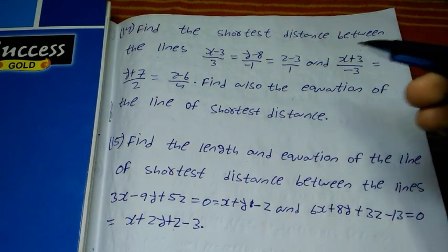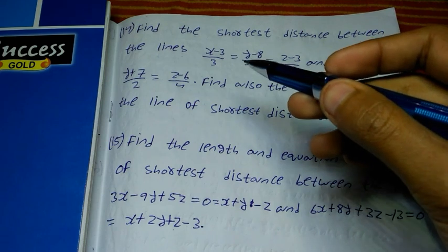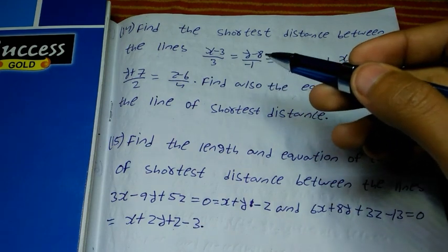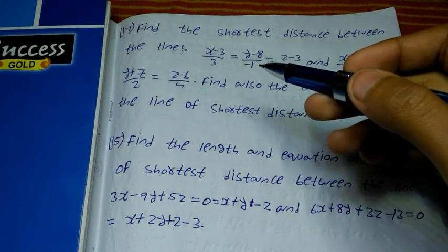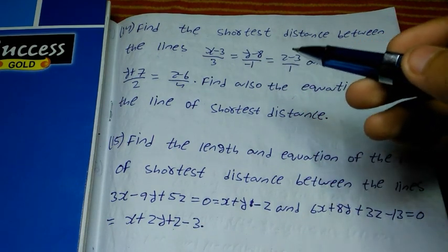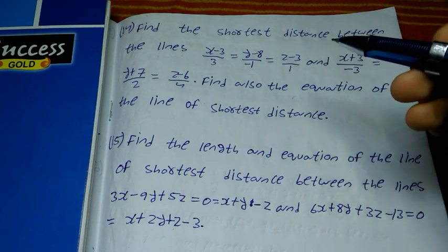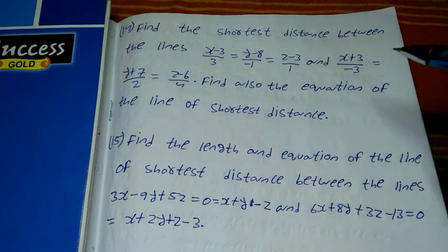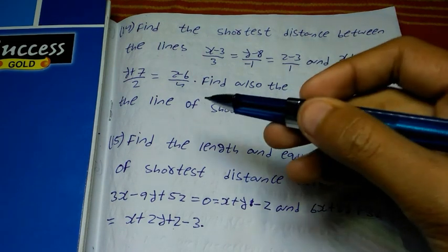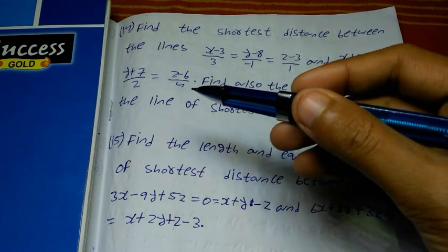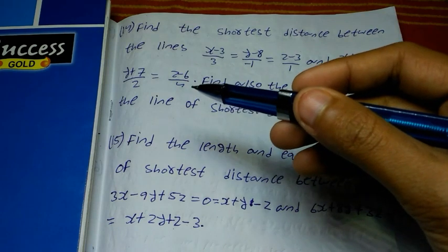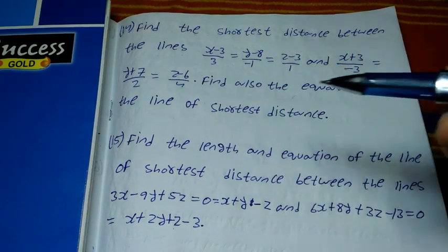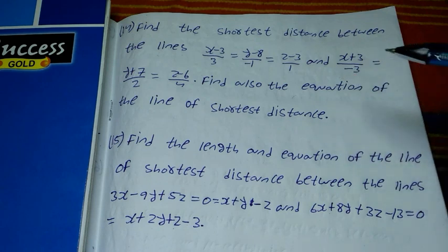Number 14 question: find the shortest distance between the lines (x minus 3)/3 equal to (y minus 8)/(minus 1) equal to (z minus 3)/1 and (x plus 3)/(minus 3) equal to (y plus 7)/2 equal to (z minus 6)/4.